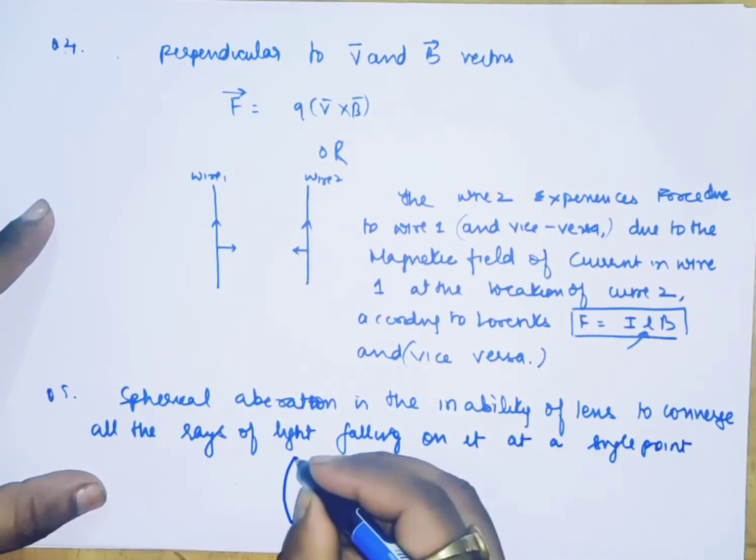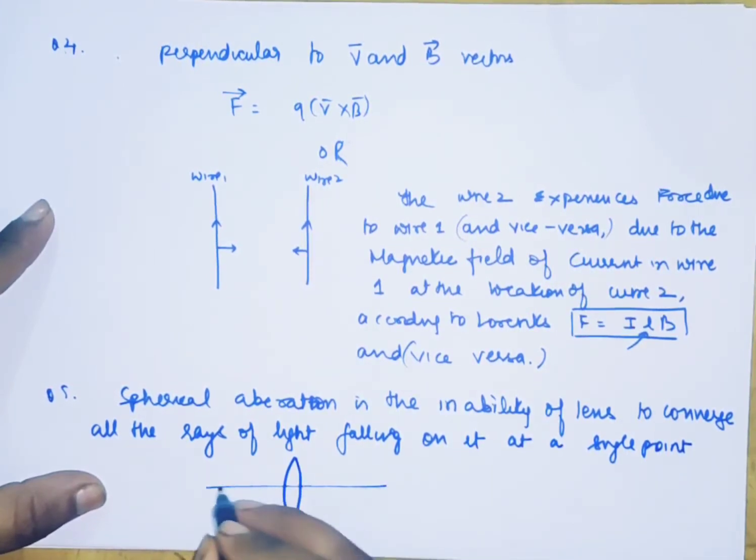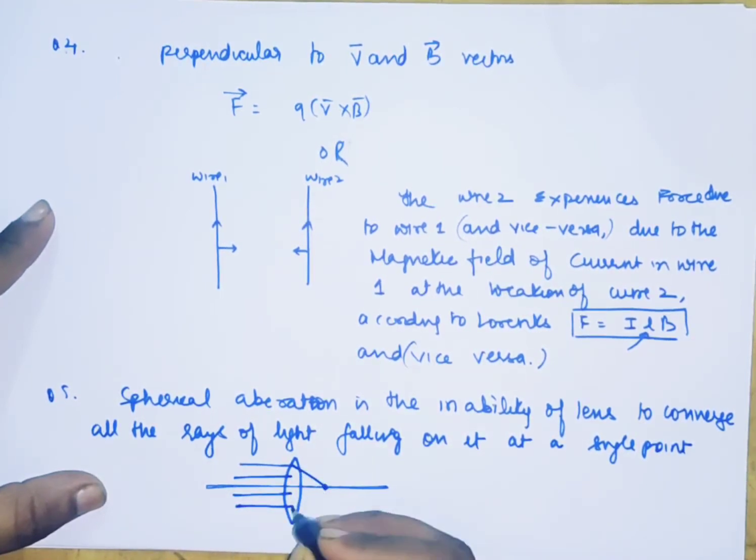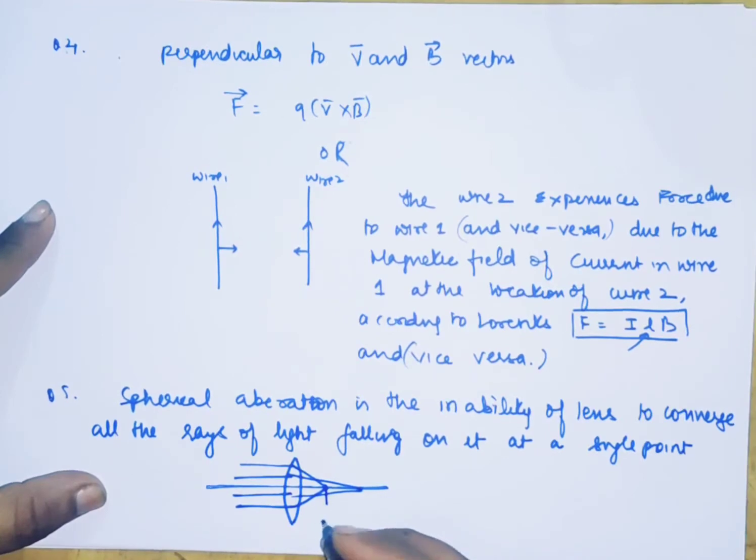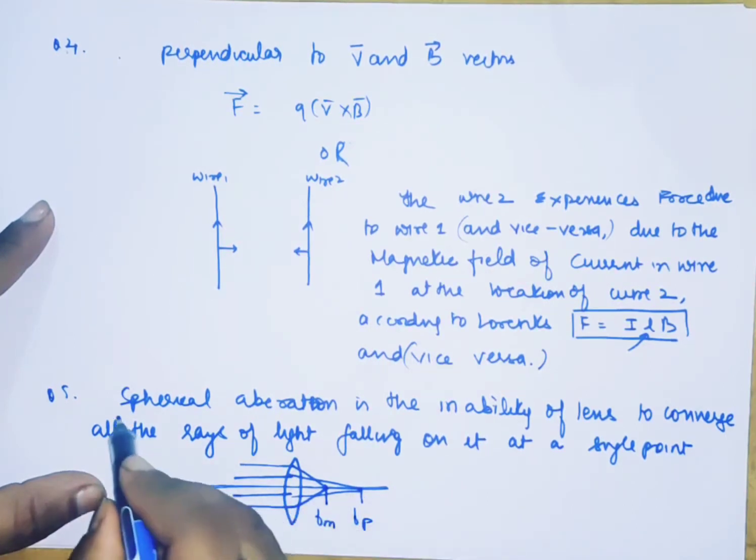This is the lens. These rays are paraxial and these at the margin are marginal rays. They fail to converge at the same point. This is the focal length of marginal rays, this is the focal length of paraxial rays. This inability of the lens to converge them at the same place is spherical aberration.